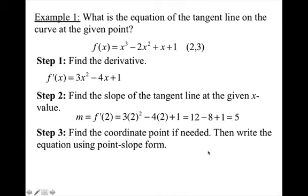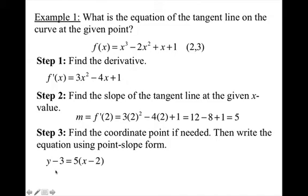Now find the coordinate point if needed, then write the equation using point-slope form. I already have the y value at x=2 on my original curve, so I do not have to find it. But sometimes you'll only be given x equals 2, and if you are not given the y value, you will have to plug x=2 into the original function. So my equation of the tangent line is y minus 3 equals 5 times the quantity x minus 2. You can stop here — you'd only solve for y if it's multiple choice and answers are in y = mx + b form.